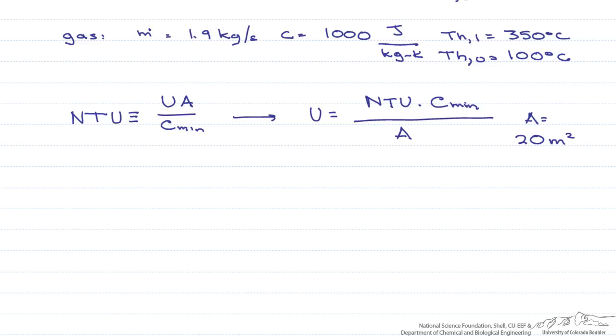The next thing we have to do is figure out what the NTU is. If we look it up on a table, we find for a concentric counter-flow heat exchanger that the NTU is 1 divided by C sub r minus 1, multiplied by the natural log of epsilon minus 1 divided by epsilon C sub r minus 1.